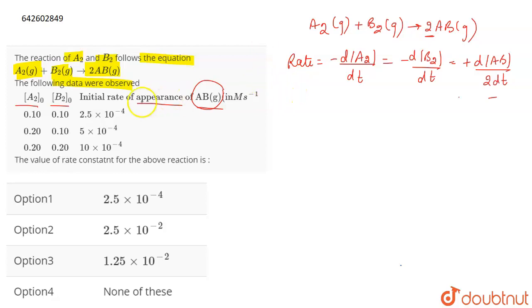Now, in the question, the initial rate of appearance of AB means that in the question, D AB by DT values are given to you. So, let us take the first data only. Let us extract the first data from here. So, for here, the value is given to you as 2.5 into 10 to the power minus 4.